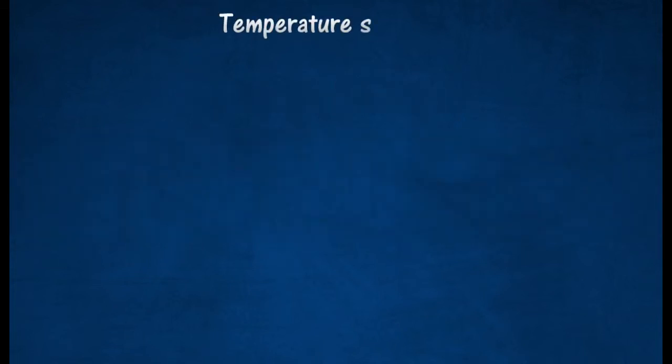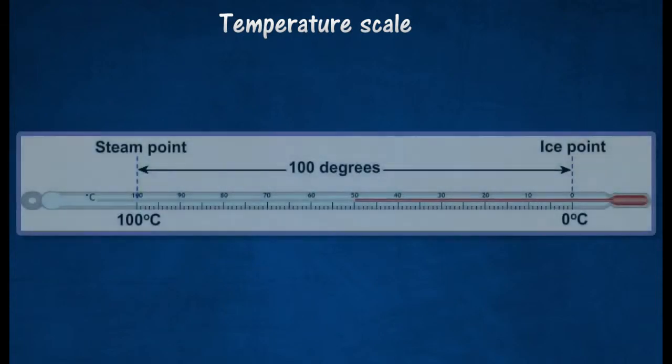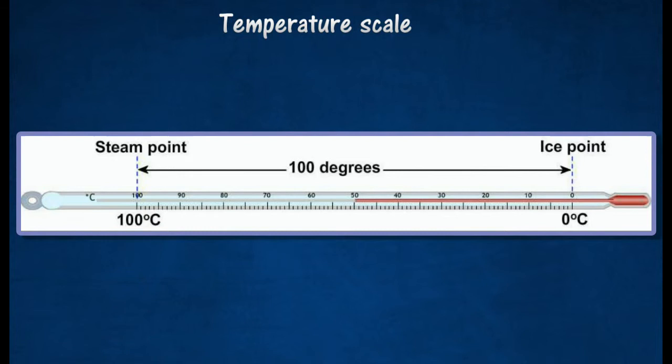A temperature scale can be defined in terms of reproducible temperatures known as fixed points. The scale and unit of temperature for the mercury in glass thermometer are obtained by choosing two fixed points and dividing the range between them into a number of equal divisions called degrees.